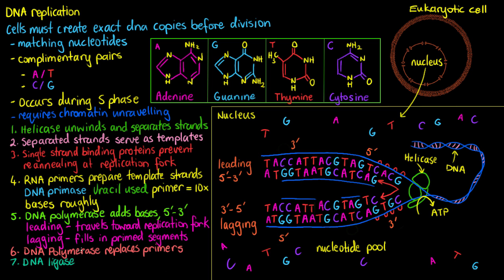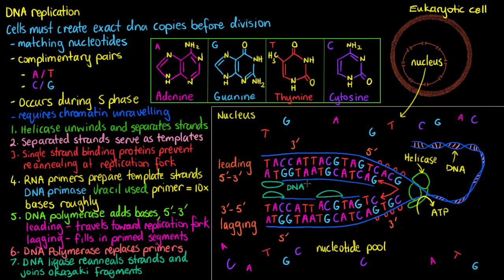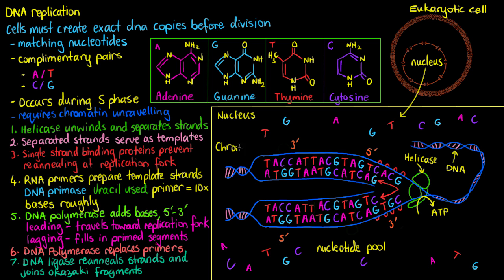We still need to join the backbone, and that brings in our last enzyme: DNA ligase. DNA ligase re-anneals those strands and joins the Okazaki fragments together, completing the backbone. Once DNA ligase has done its job, the DNA winds back up into its double helical structure, leaving us with two chromosomes. The cell is now ready to begin mitosis or meiosis, and the individual chromosome copies will reconnect with the histone proteins to create nucleosomes again as part of the chromatin.